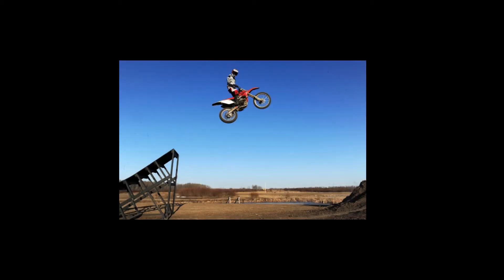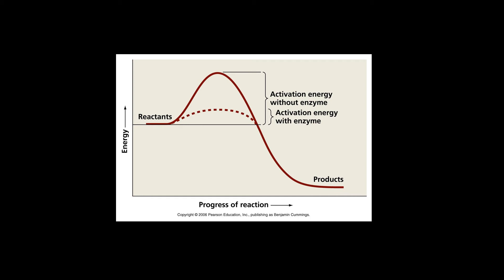Let's use a visual to illustrate some of these concepts. Someone on a bike is successfully making it over a ramp — the chemical reaction is proceeding without the enzyme. To make it over the ramp, they must get up a certain amount of speed. Chemical reactions require a specific amount of energy to proceed. This is called the activation energy. If the ramp is lowered, less speed is required to make it over the ramp.